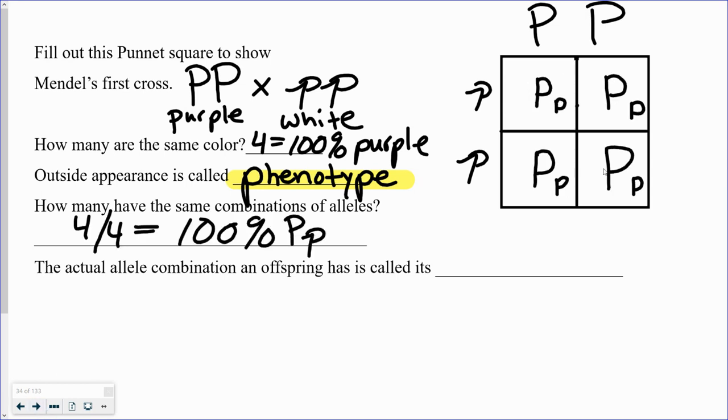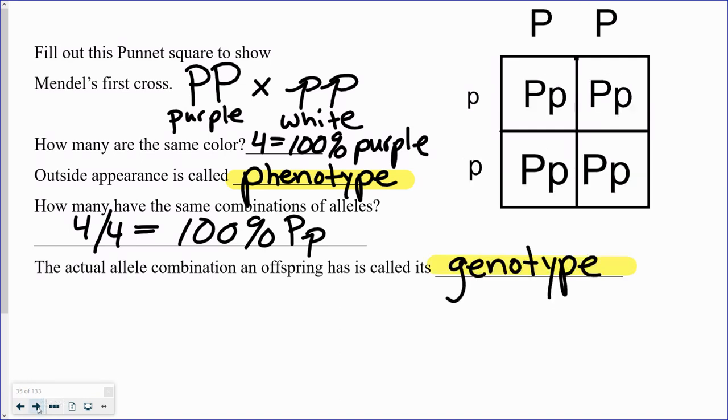When we look at the actual combination of alleles, that's called the genotype. So capital P, lowercase p is a genotype. Capital P, capital P is a genotype. Lowercase p, lowercase p is a genotype.